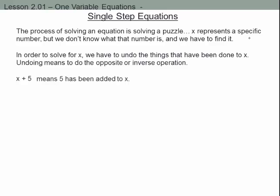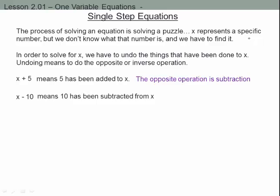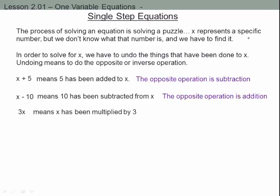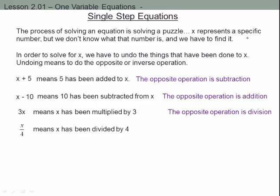For example, x plus 5 means 5 was added to x, and the opposite operation is subtraction. x minus 10 means 10 was subtracted, so the opposite is addition. 3x means x was multiplied by 3, so the opposite is division. x over 4 means x was divided by 4 — we want to look at this as division, not as a fraction. The opposite operation for division is multiplication.